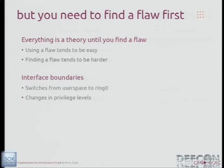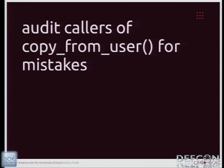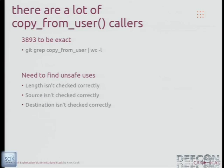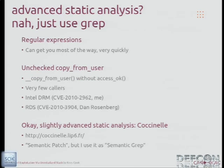But all that's unimportant if you don't have a flaw — you need that arbitrary write to begin with. So I started looking at interface boundaries, where things make transitions. I was especially interested in copy_from_user because that's where you're pulling information from user space and putting it somewhere in the kernel. There are a lot of callers — about 4,000 — so it was a bit daunting to start with that. I'm looking for things where length isn't checked, source isn't checked, destination isn't checked. We don't really need advanced static analysis — grep will work most of the time. In fact, there's a version of copy_from_user that does not perform access checks at all, with very few callers — one was in Intel DRM, another one was in RDS.